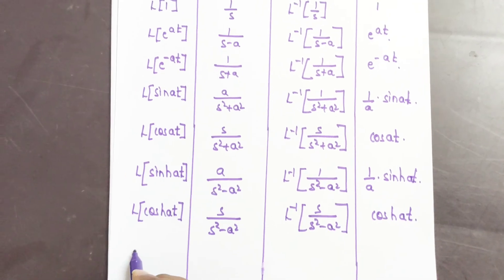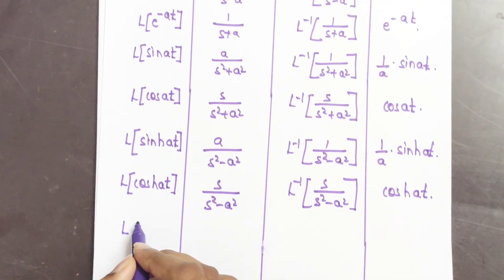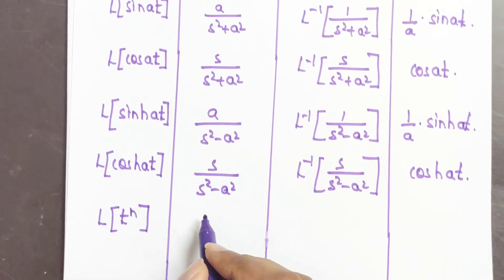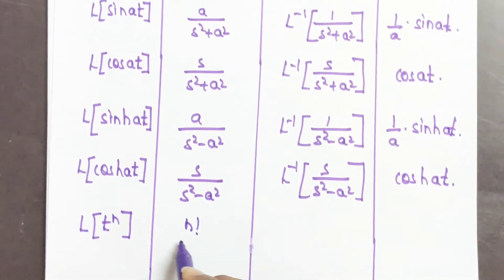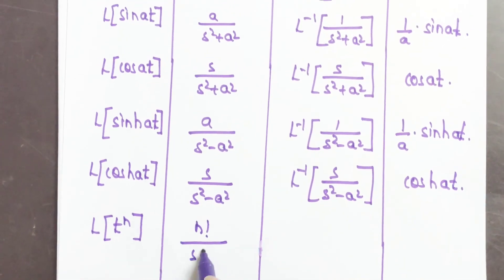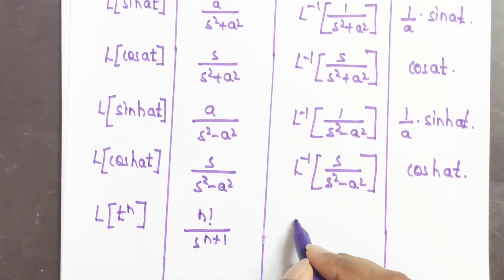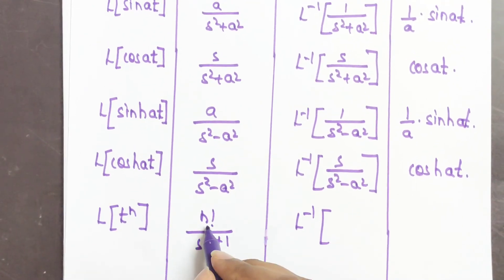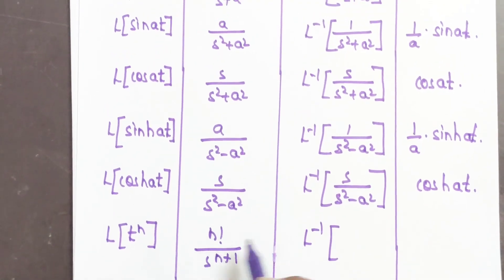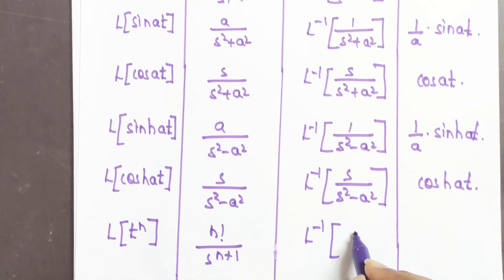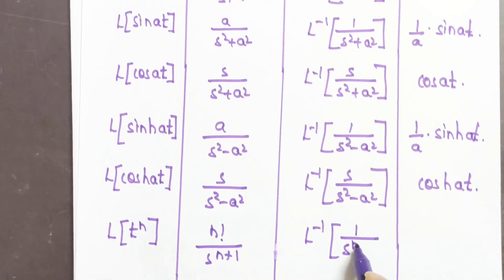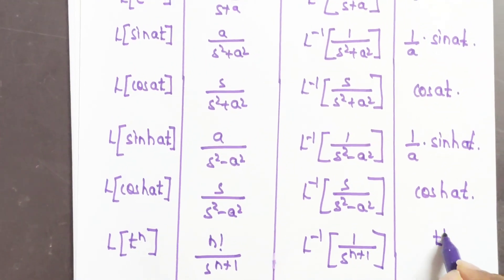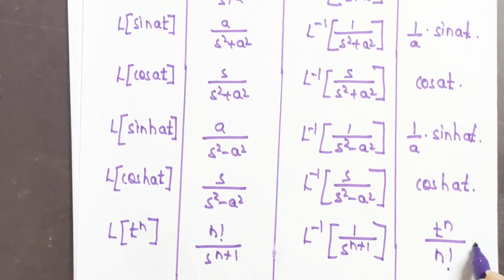Coming to the last formula — Laplace of t^n. We know that Laplace of t^n is n!/(s^(n+1)). Here we take n! aside and apply inverse Laplace to 1/s^(n+1). The answer is t^n / n!. Thank you very much, guys.